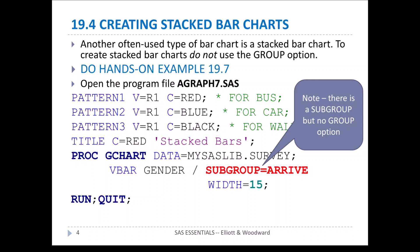We're doing example 19.7 from the text. We're going to open up the file called agraph7.sas, and you can see the code there. In particular, I want to point out the code I have in red, which is subgroup equal arrive. Notice we have a subgroup option here.